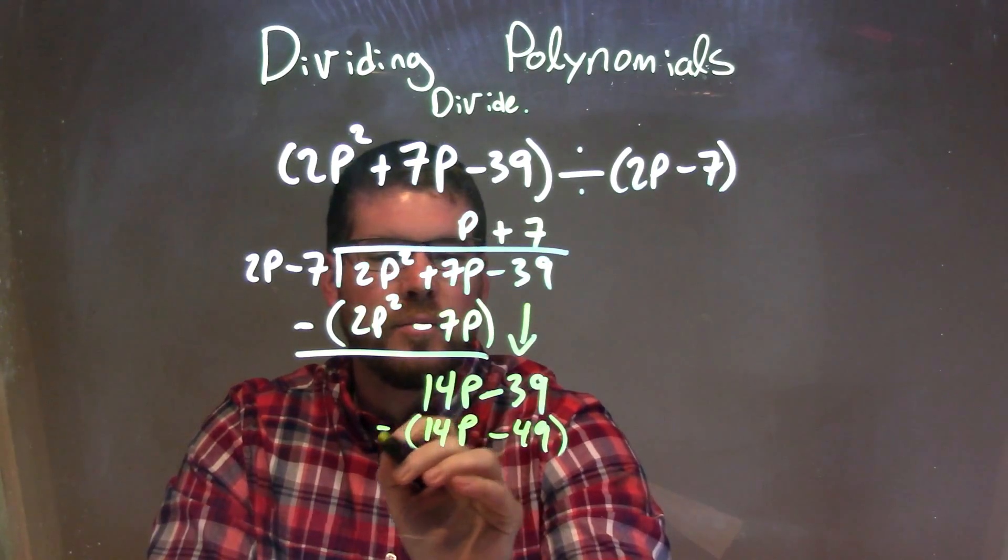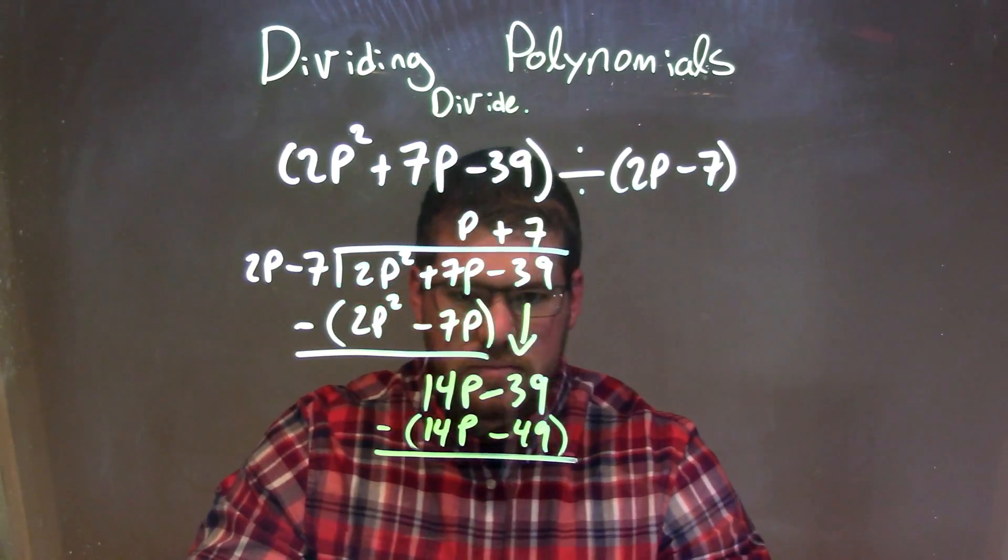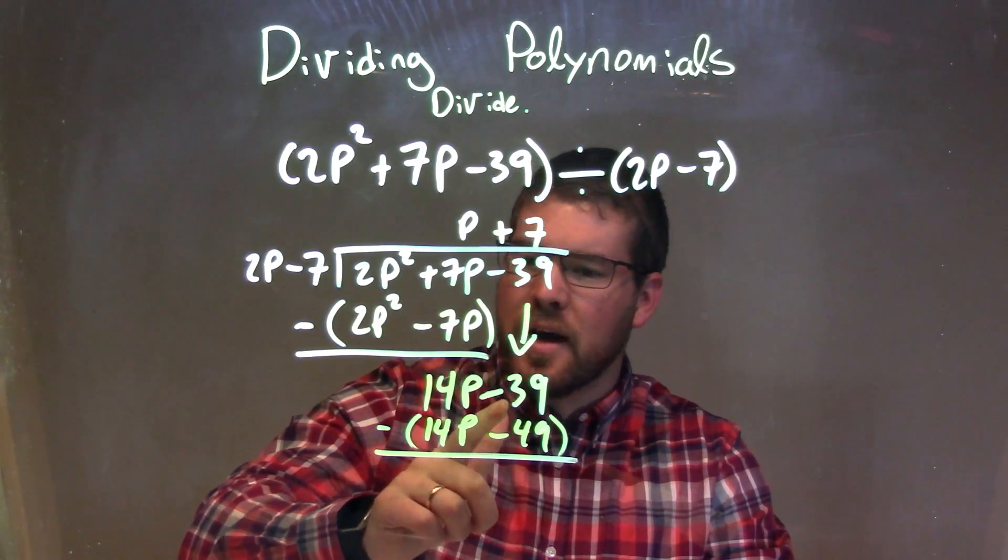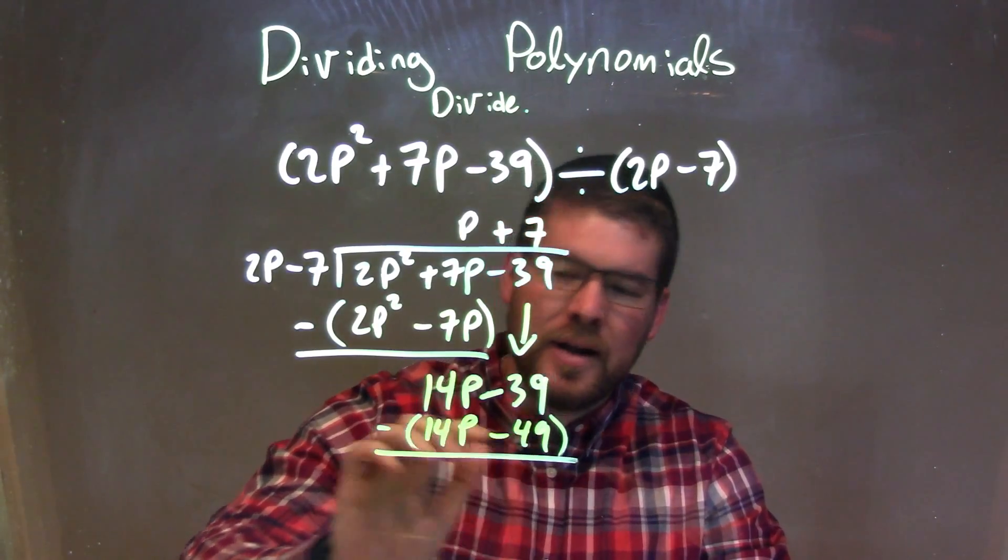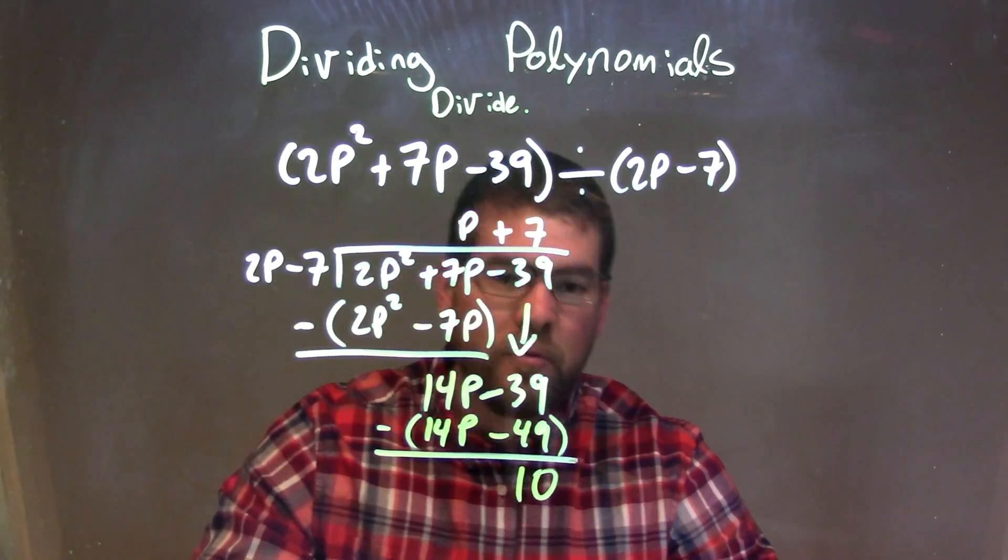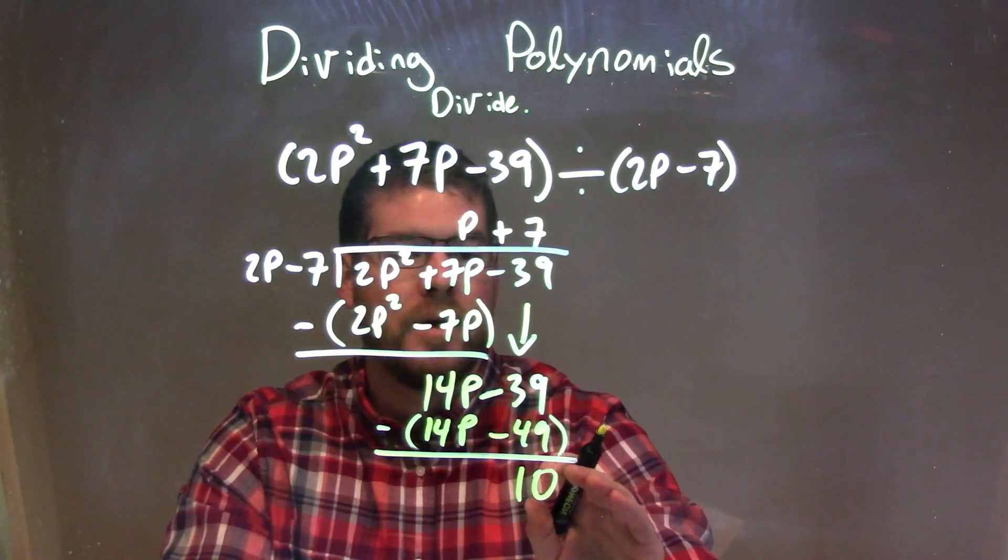And what we need to do now is we're going to subtract the top from the bottom. So 14p minus 14p is 0. And minus 39 minus a negative 49 is like adding a positive 49, which is a positive 10. And that's my remainder.